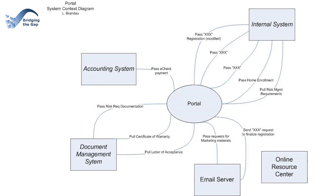Here's an example of a System Context Diagram, and there are three primary elements to the syntax. First, there's the core system. In this case, the core system is the portal, and it's represented by the oval in the middle of the diagram. Typically, a System Context Diagram has only one core system, and in this case, the portal is the new system that's being built for this project.